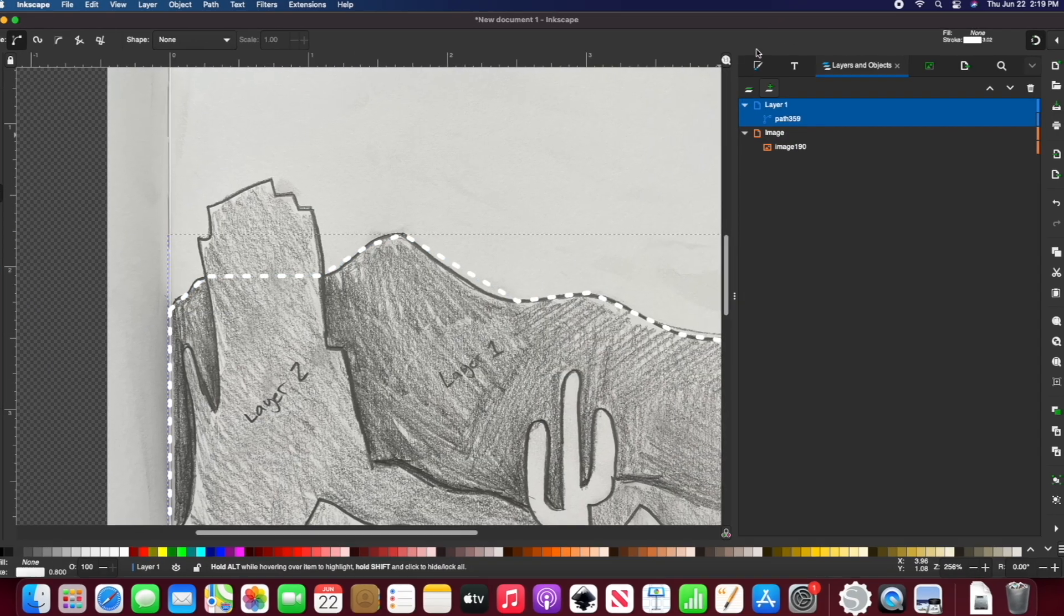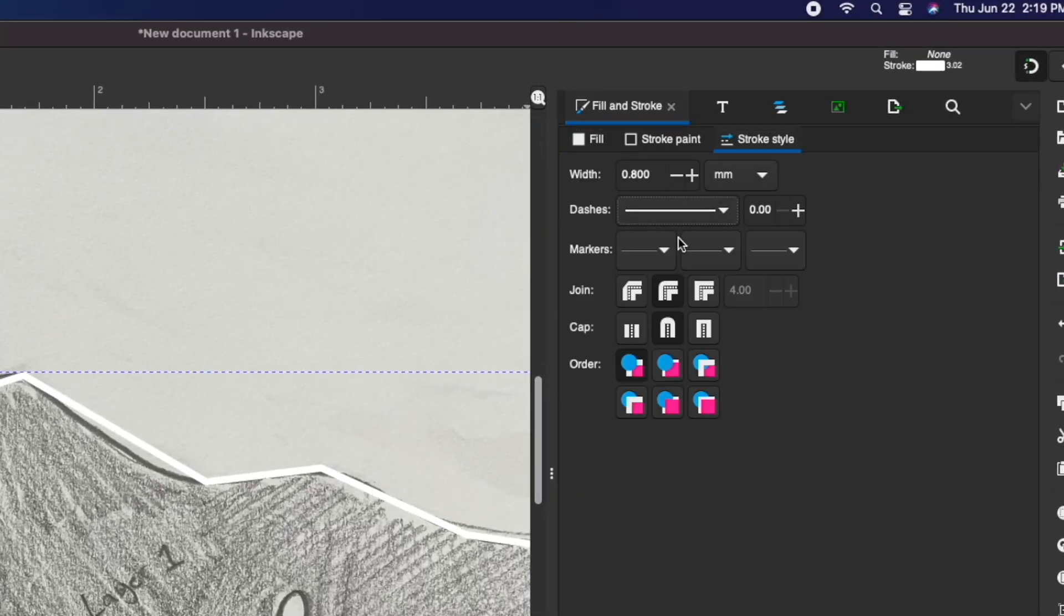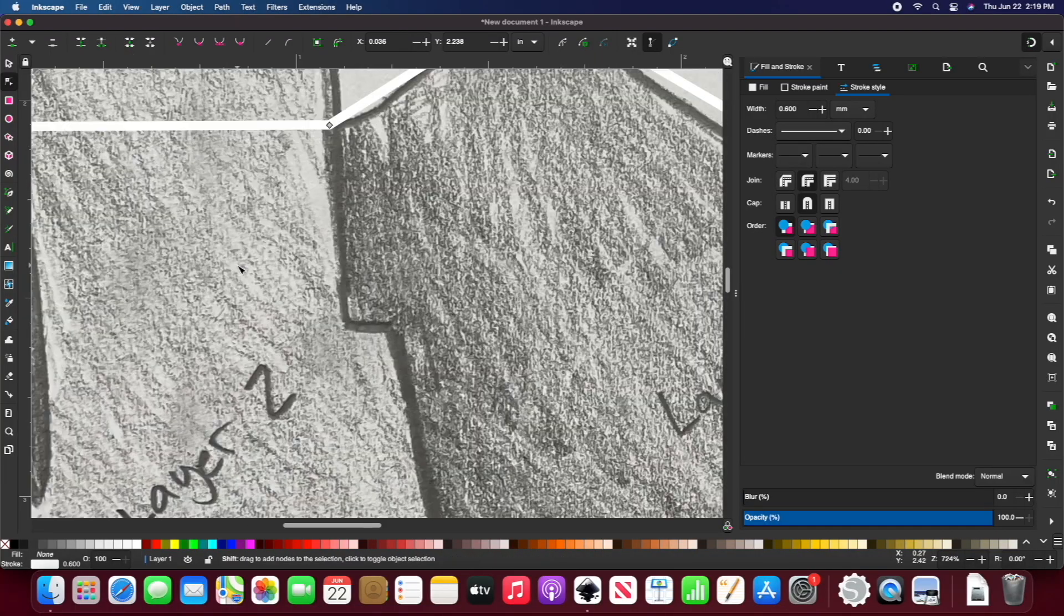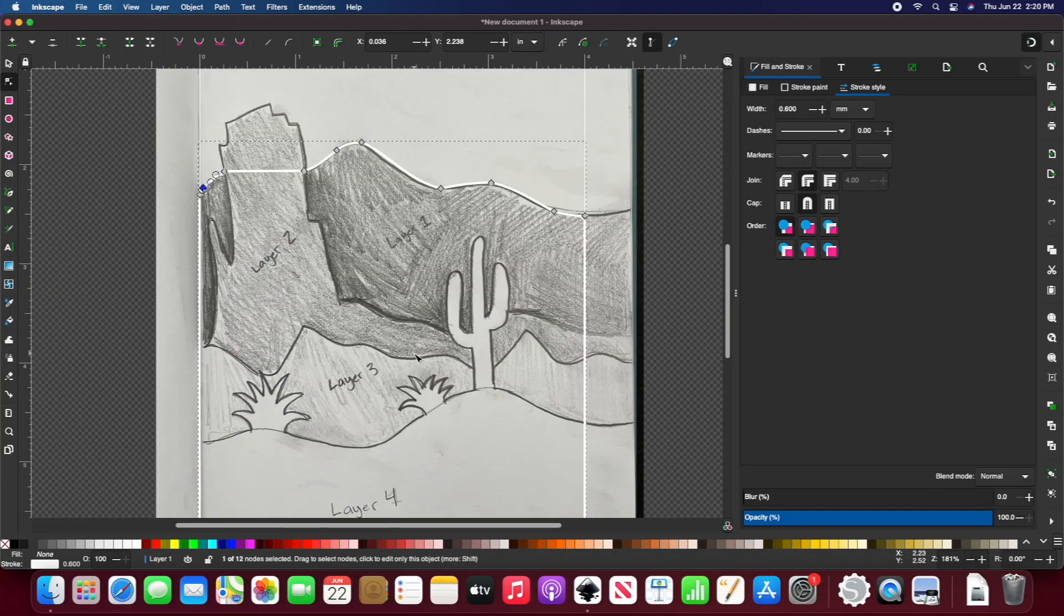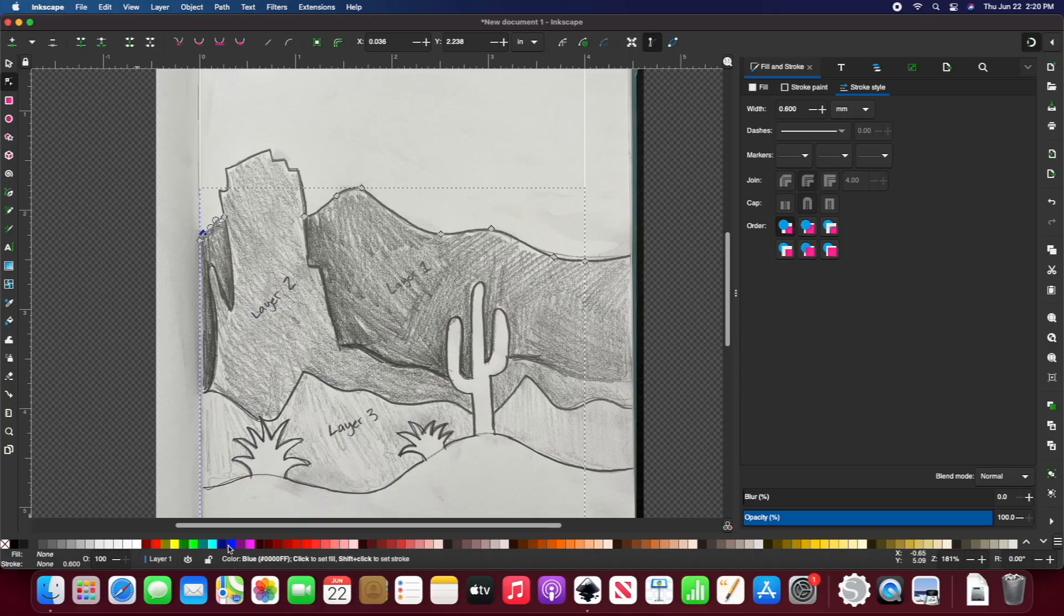And I don't want my line to be dashed, so I'll fix it in the fill and stroke tab. It's just easier to tell where to curve it when it's not dashed. Now I can use my node selection tool to correct the design.